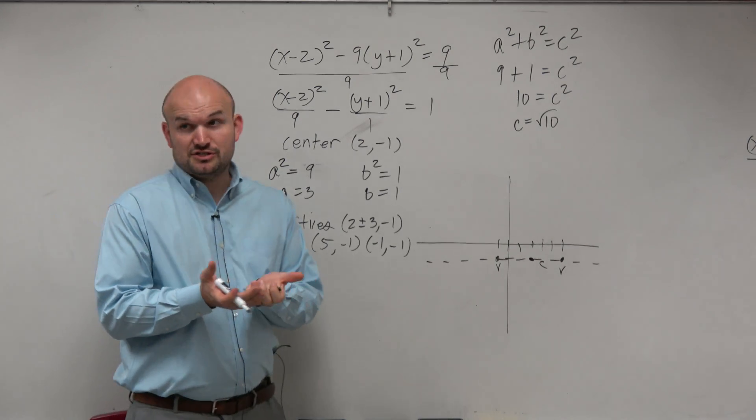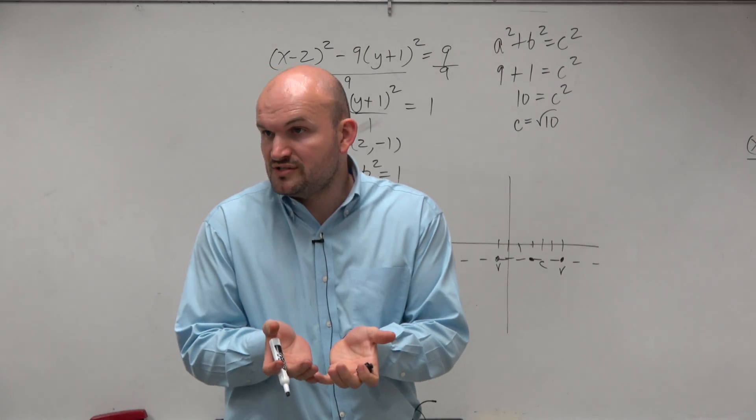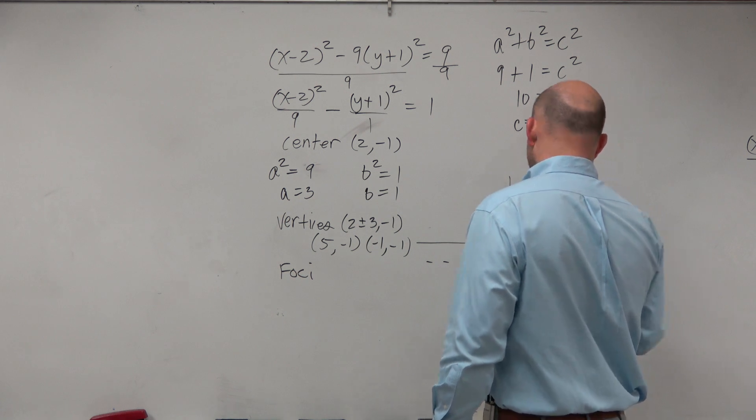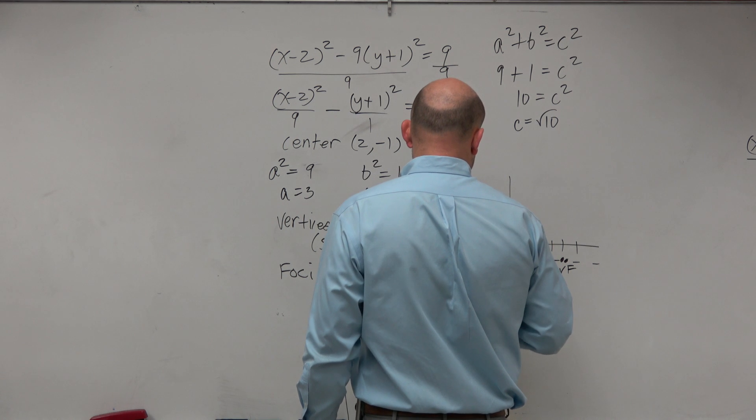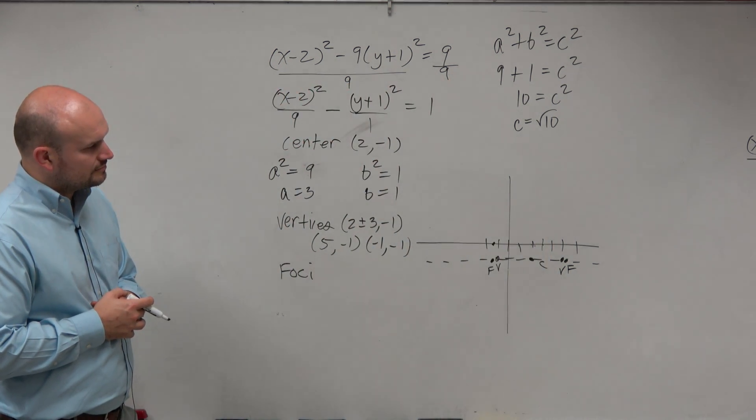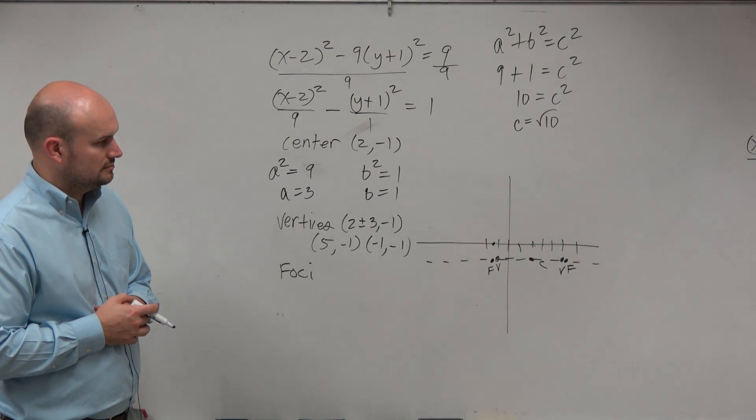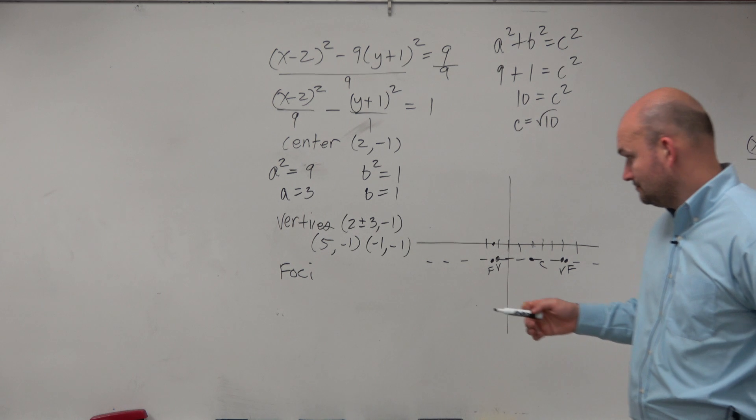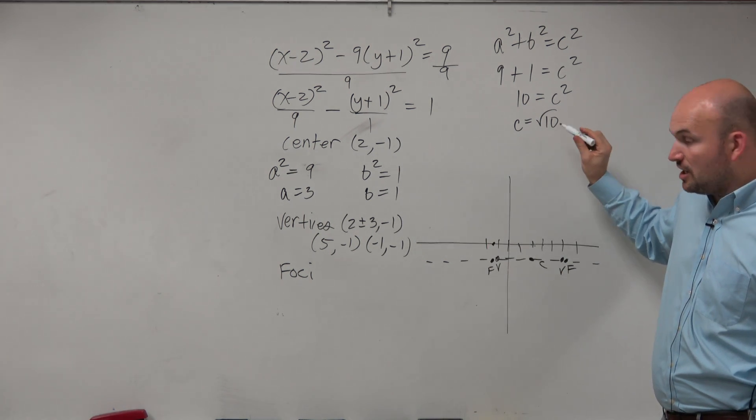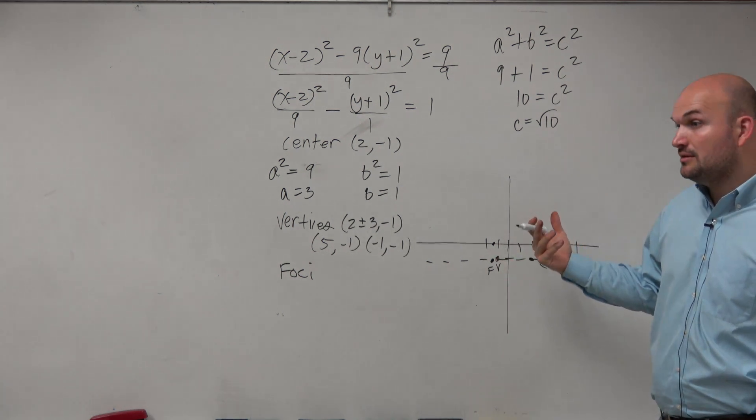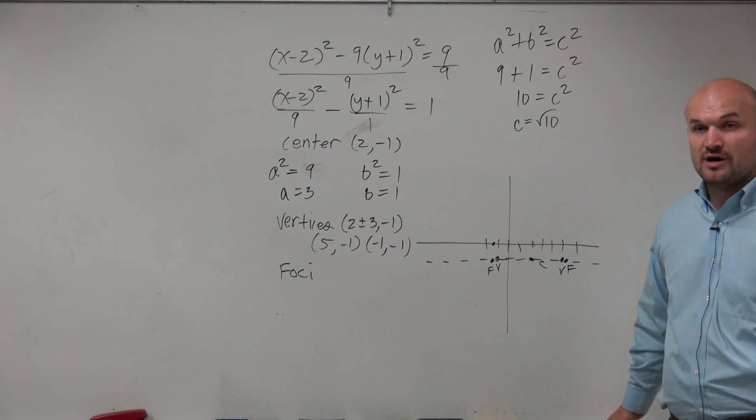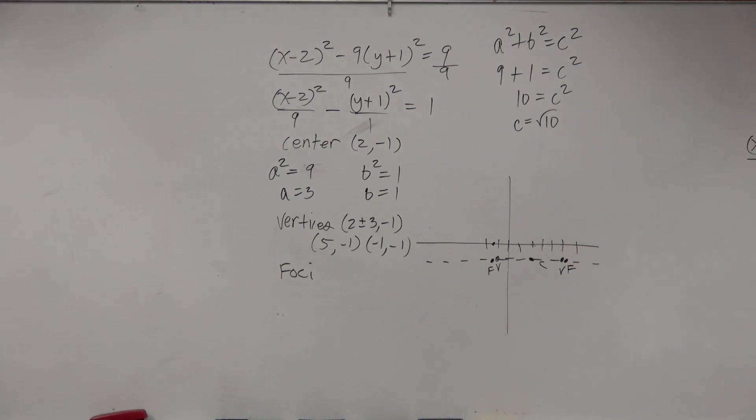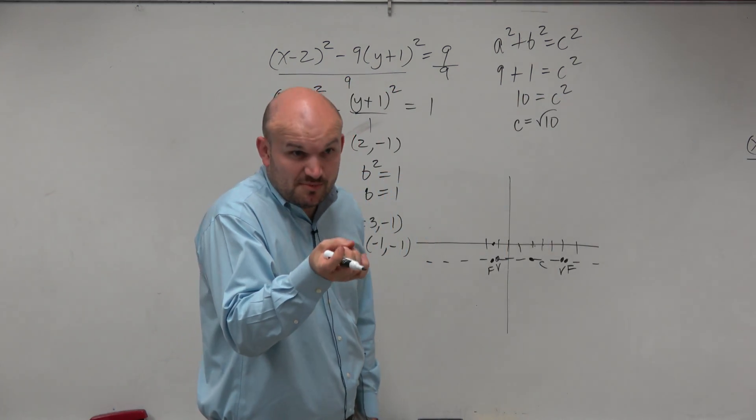Let's go and find the foci since the foci go along the same axis. So the foci is going to be the square root of 10. And again, let's just use estimation. Square root of 9 is 3. Square root of 16 is 4. So square root of 10 is between 3 and 4, right? Foci is really, really close to it.